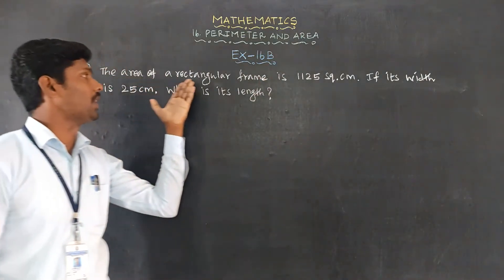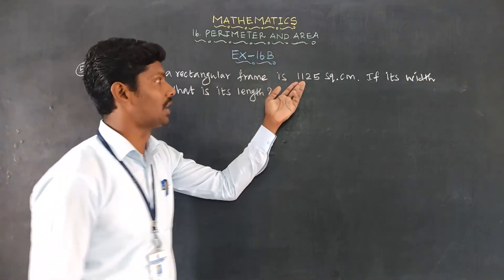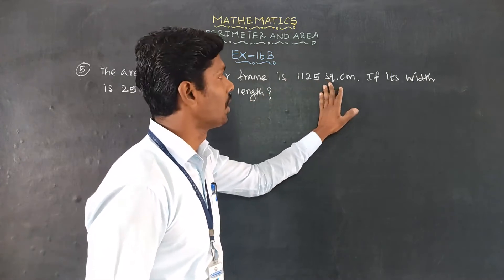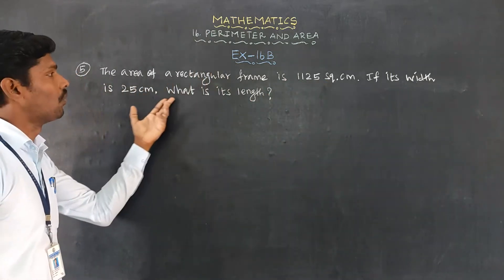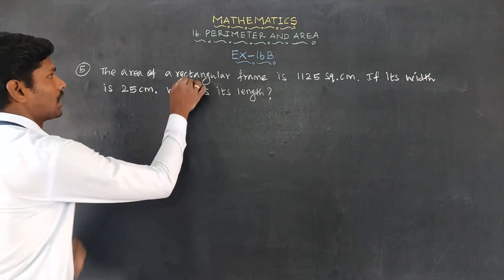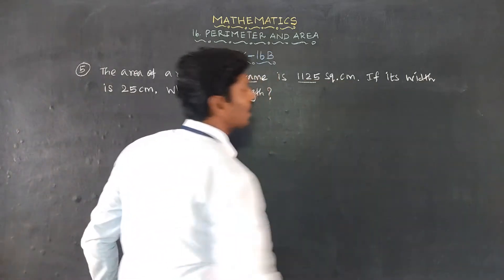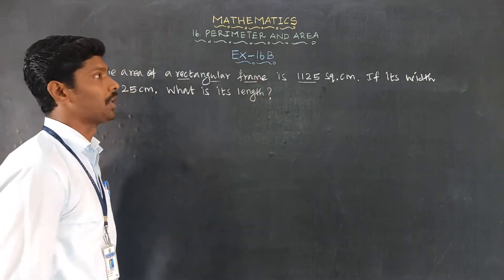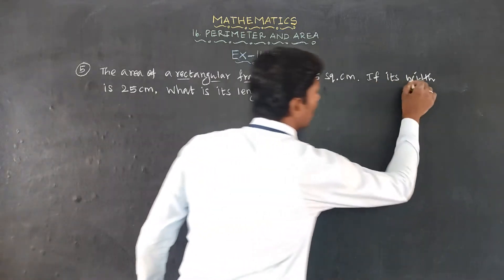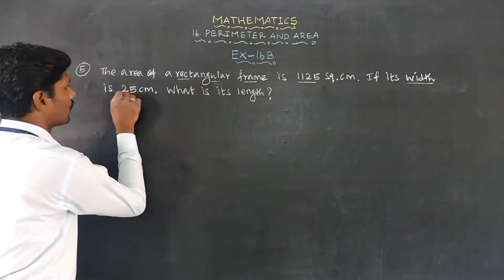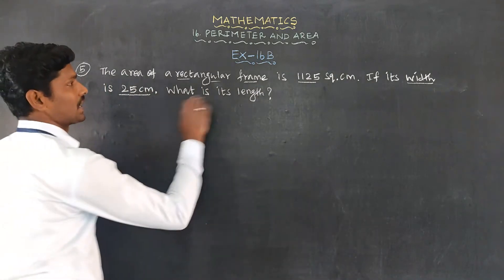The area of a rectangular frame is 125 square centimeter. If its width is 25 centimeter, what is its length? The rectangular frame is 125 square centimeter, and width is 25 centimeter, what is its length?